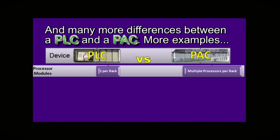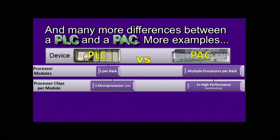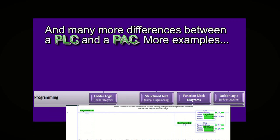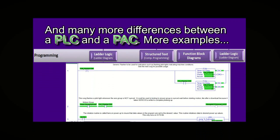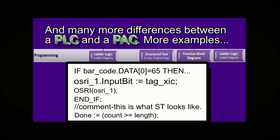A PLC can only have one processor module in the first slot. A PAC can have multiple modules in any slot, as they are just Ethernet devices on a network. When a PAC is just being used to replace a PLC, ladder logic is still the common programming language. But sometimes the machine designer uses a COBOL-like computer programming language called structured text instead.